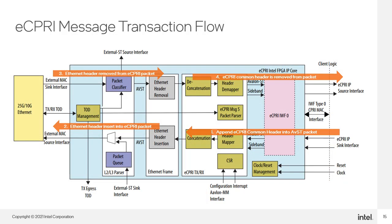This slide demonstrates how general eCPRI message packets flow through the IP core. One: an eCPRI message packet comes in, and the header mapper appends the common header to it. Concatenation may also take place based on a user-controlled signal in the sync interface. Two: the Ethernet header block inserts the Ethernet header and sends to the MAC. Three: on the receive side, the Ethernet packet containing an eCPRI message passes through the packet classifier, and the Ethernet header is removed by the Ethernet header removal block. Four: deconcatenation is performed if needed, then the eCPRI header block removes the common header and the final payload is forwarded to the user. Note that if the IWF Type 0 block is enabled, packets originate as CPRI frames in the core logic and are converted to eCPRI messages, and responses are converted back to CPRI frames.